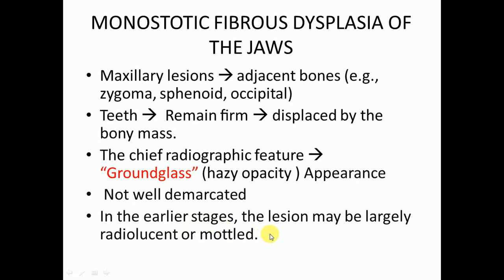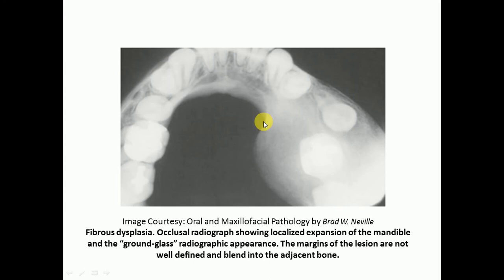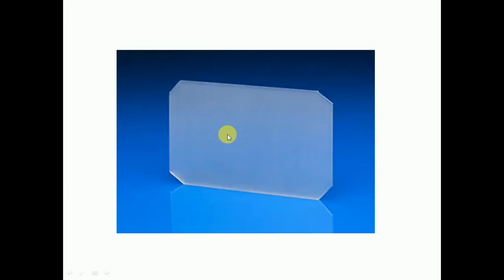This occlusal radiograph of the mandible shows localized expansion of the mandible and the ground glass appearance. The margins of the lesion are not well defined — they blend into the adjacent bones. Margins will never be well-demarcated; they always blend into adjacent bone.